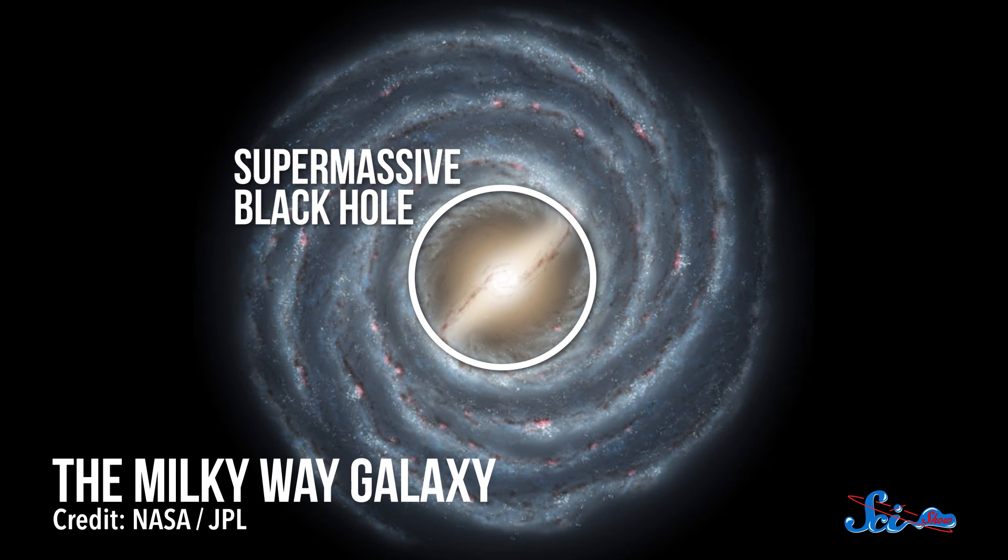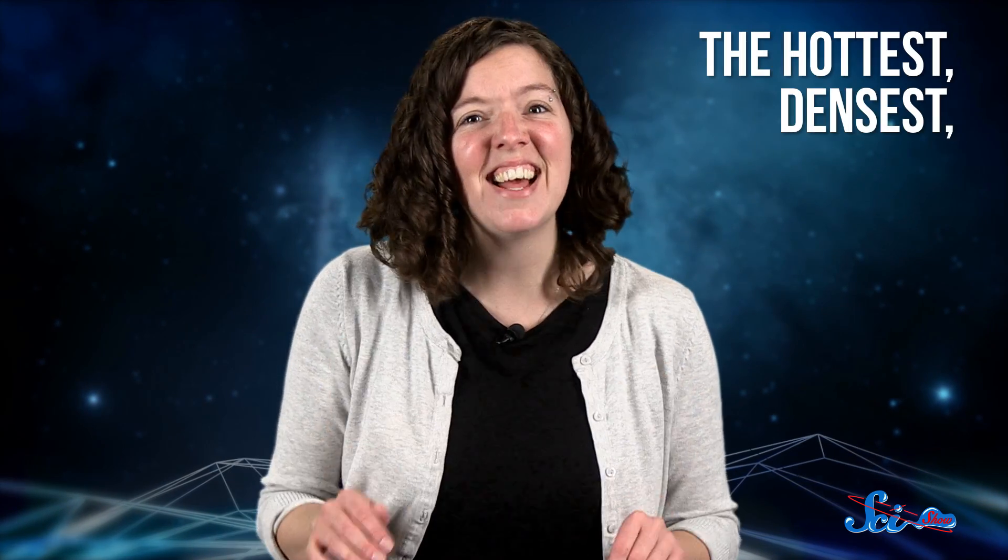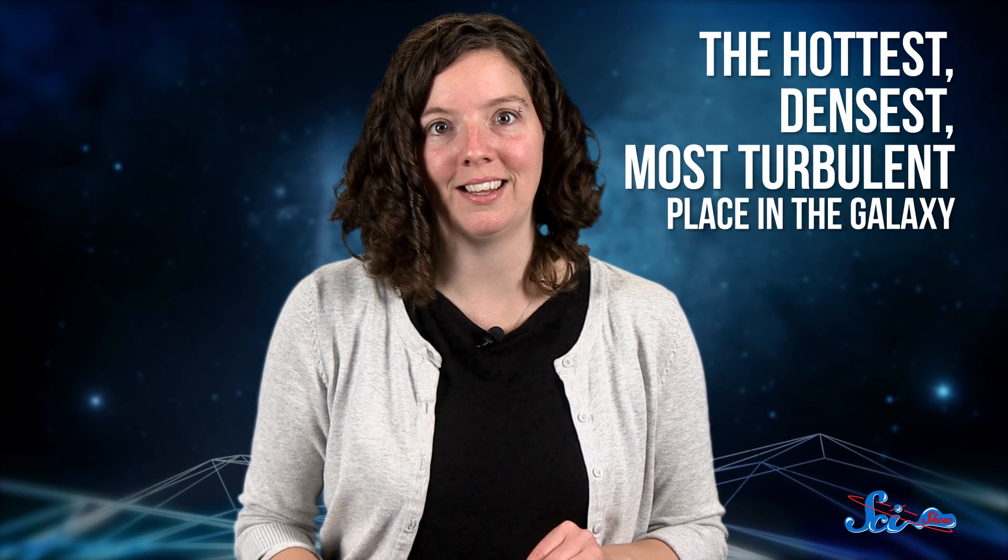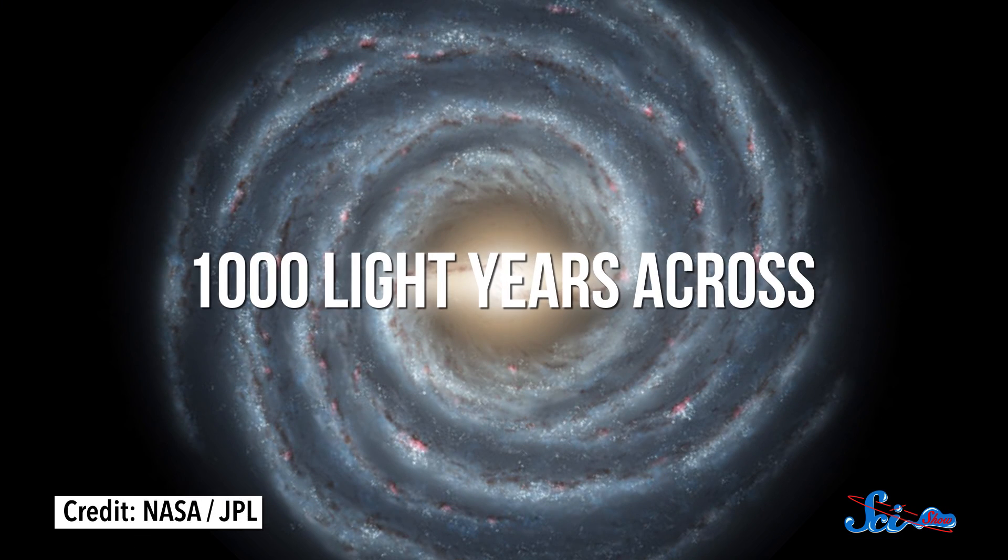Black holes are what's left over when a star collapses, and they have an incredibly strong gravitational pull. Because of that super powerful force, the supermassive black hole's neighborhood is the hottest, densest, and most turbulent place in the galaxy, stretching nearly a thousand light-years across.